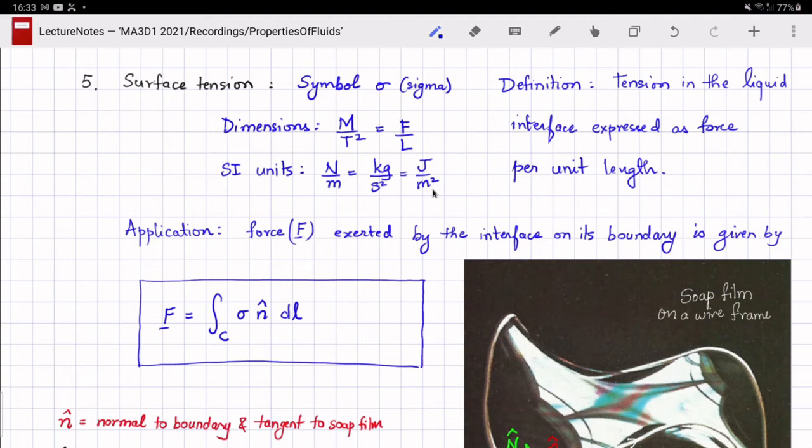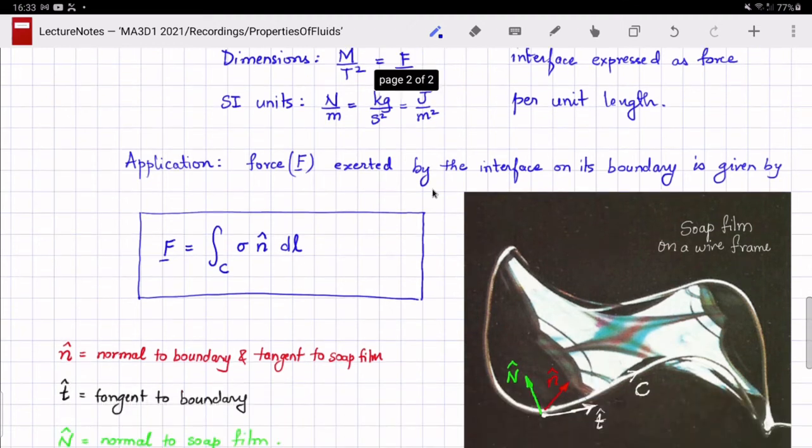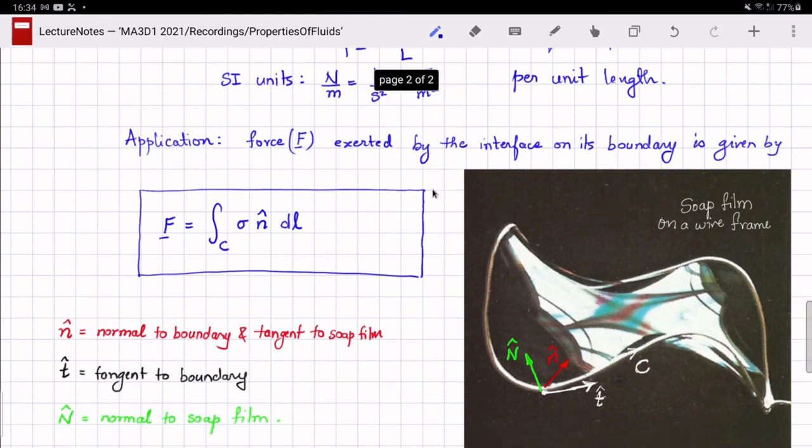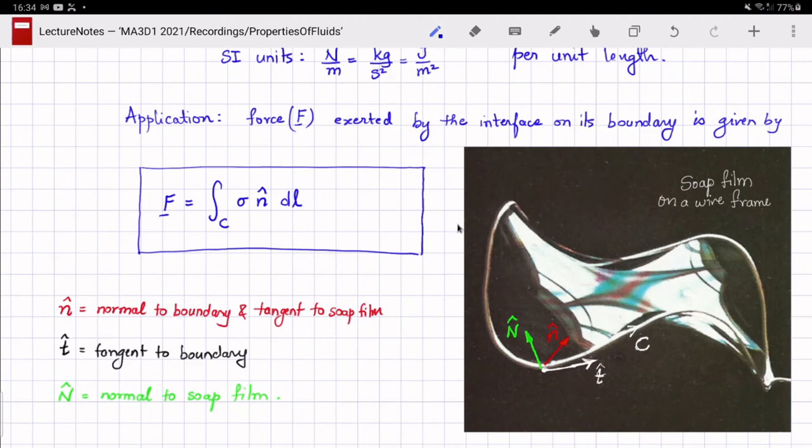But the way one uses surface tension is very similar to pressure. You can think of surface tension as pressure but in two dimensions acting along the interface. To illustrate this, consider a soap film which is attached to a wire frame. The curve formed by the wire frame I will denote C and little t hat is a unit vector that is tangent everywhere to the wire frame.